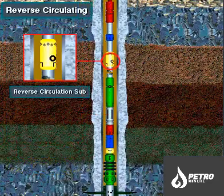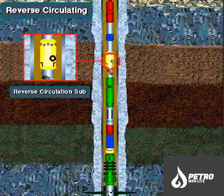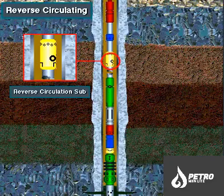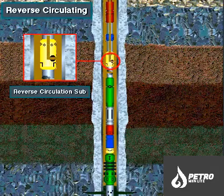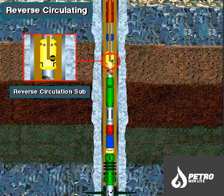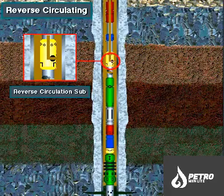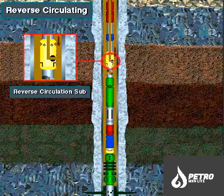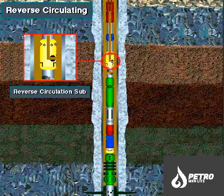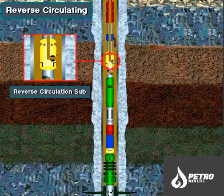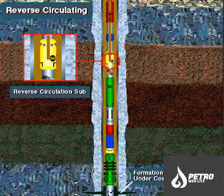To remove the DST tool from the hole, the driller first opens the reverse circulation sub, usually hydraulically by pumping drilling fluid down the annulus. This increased pressure in the annulus opens the sub. With the sub open, drilling fluid reverse circulates down the annulus and up the tool and drill string to the surface, pumping the remaining formation fluids out of the drill stem and putting drilling fluid back in. The drilling fluid kills the well — that is, it once again keeps the formation pressure under control.